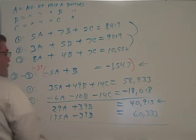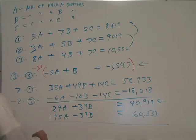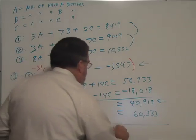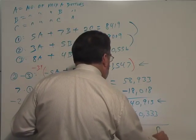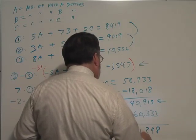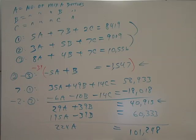Okay, so we're going to combine, add these two equations together so that the B's cancel. And we get 224A equals to, that would be 8, 4, 12, 1, 10, 101,248.